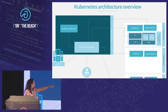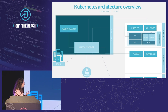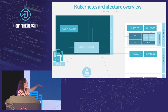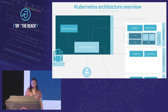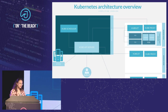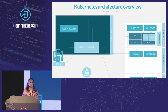Now that we know what a pod is, let's have a look at a quick overview of Kubernetes. The main component of Kubernetes is the Kube API server, and that lives on the master node. The pods all live on the worker nodes, and we can have multiple worker nodes. The Kube API server exposes the Kubernetes API and basically serves as a front end to the cluster.